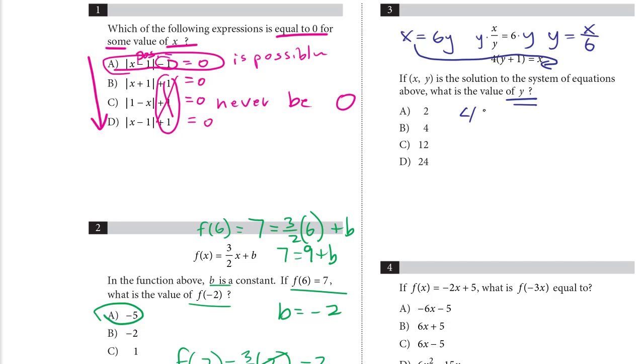So 4 times quantity y plus 1 equals 6y. Now when I solve, I'm actually solving for the answer to the question. So first, I have to distribute: 4 times y is 4y, 4 times 1 is plus 4 equals 6y. Subtract 4y from both sides. 4 equals 2y. Divide by 2 on both sides. It's y equals 2. That is our answer. It looks like A is the correct answer.